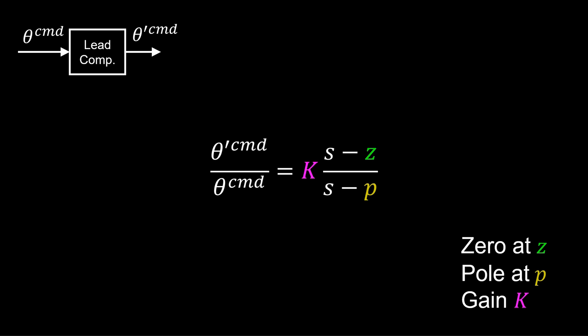It's characterized by a zero at Z, a pole at P, and a gain K. It's specifically a lead compensator if the zero is right of the pole in the real imaginary plane. If the opposite is true, it's a lag compensator.